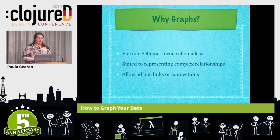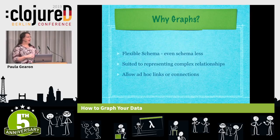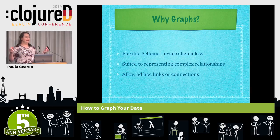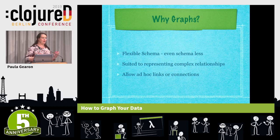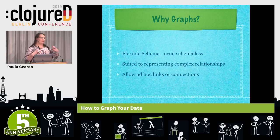Graph databases are very suitable for representing complex relationships, and you're able to create ad hoc links where you've got things which you weren't anticipating connecting, and you can connect these things up. Because everything is composable in a graph database, this allows you to create rather complex relationships very easily.